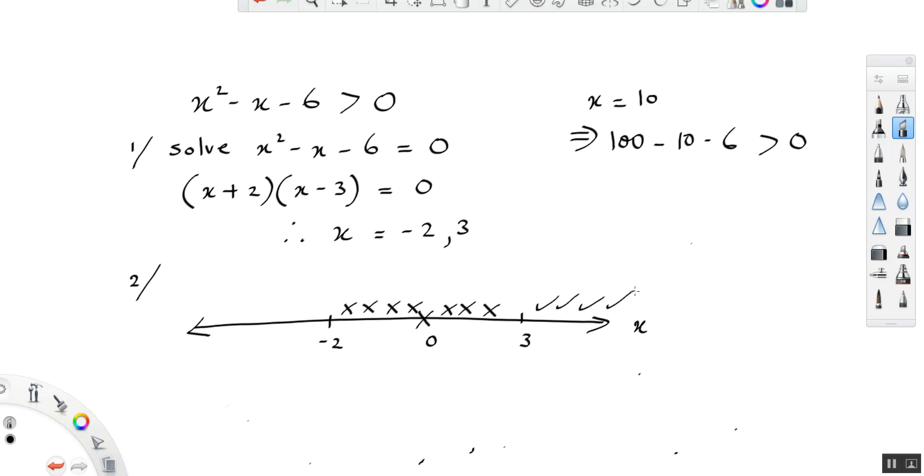So when we put in x equals minus 10, we're going to get minus 10 squared. Now, minus 10 squared is 100. Then minus minus 10 minus 6. What does that give us? 100 plus 10, 110. 110 minus 6 is 104. So that is clearly greater than 0.